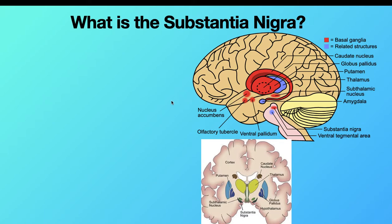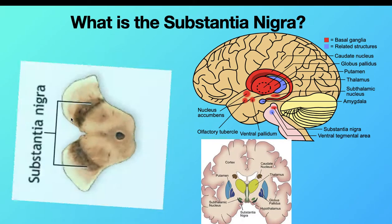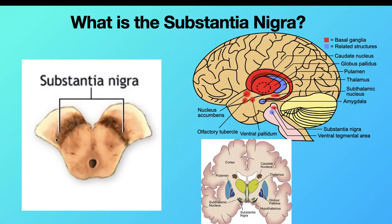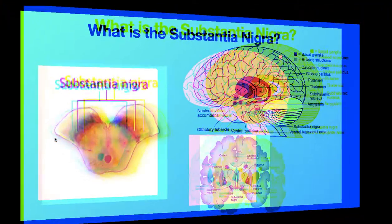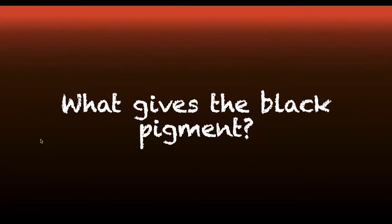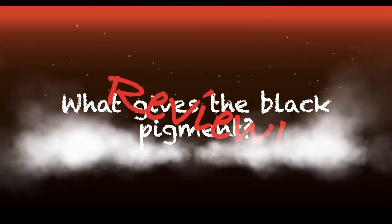The substantia nigra will look like this — it has a black pigment. To understand what gives it the black pigment, we'll need to do some review.